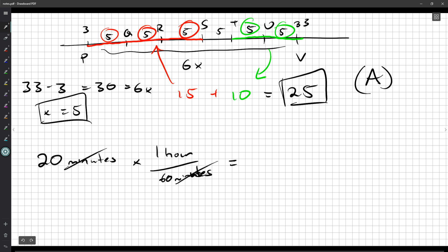The minutes cancel out, we're left with hours. 20 times 1 is 20, divided by 60 is one-third. 20 minutes is a third of an hour.